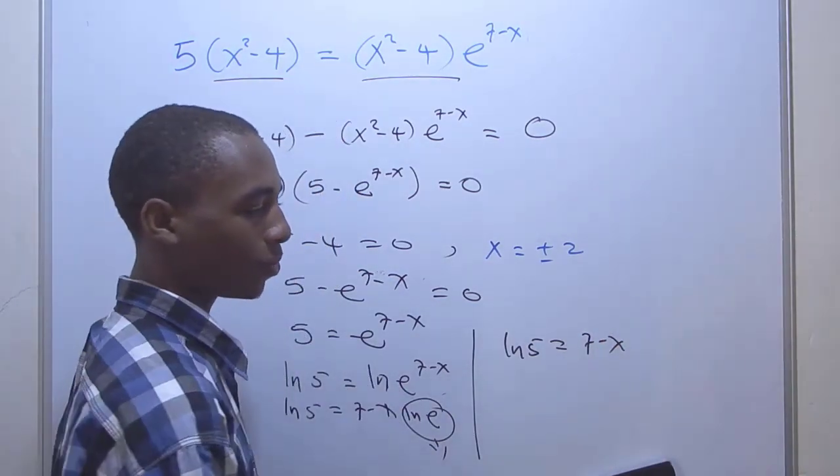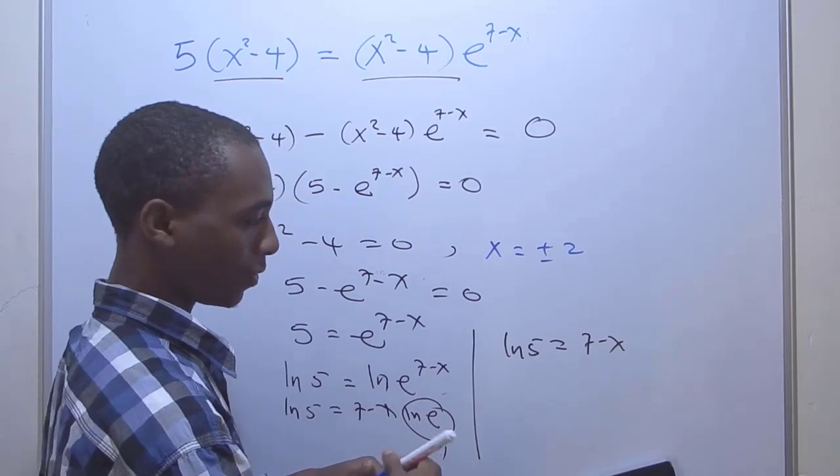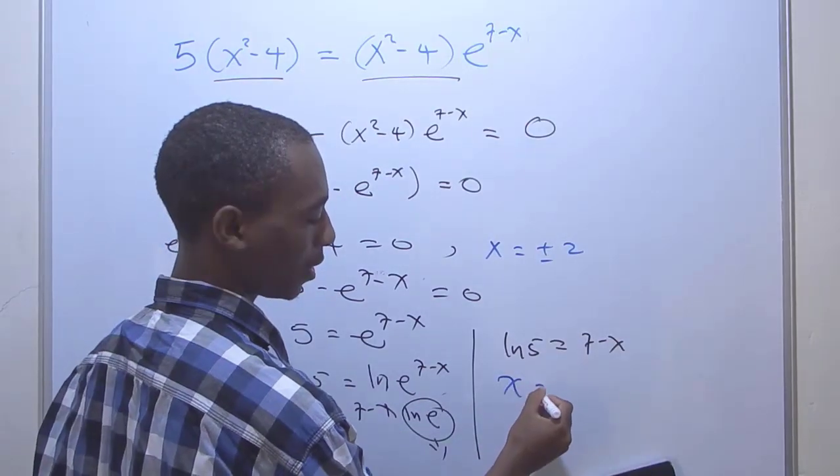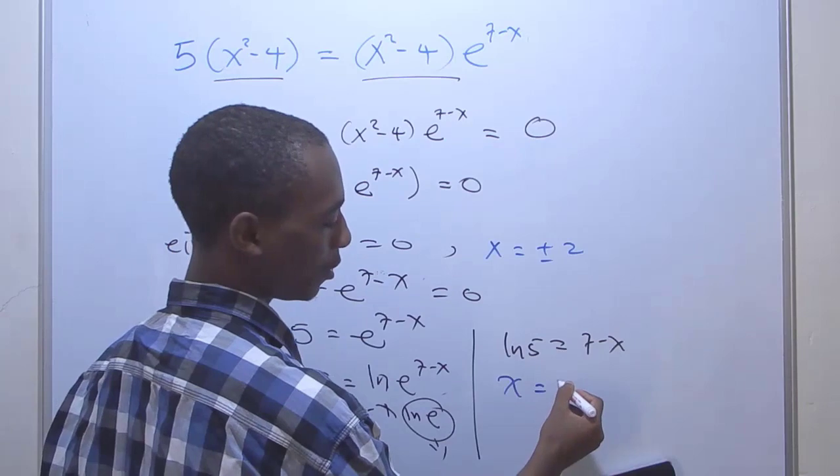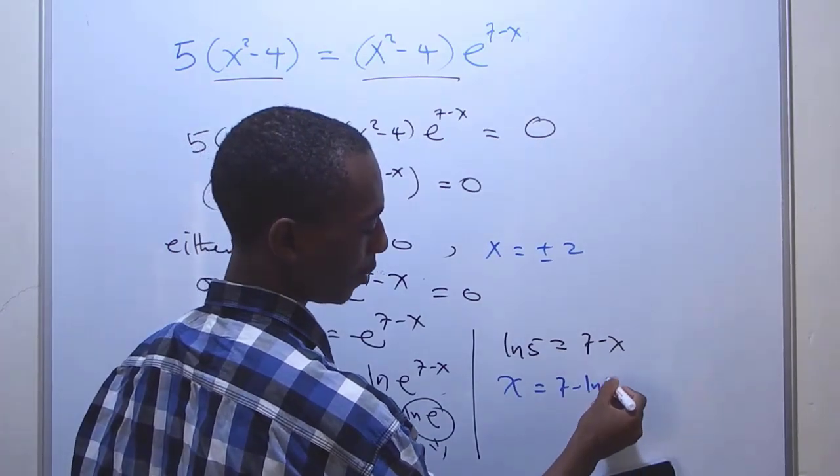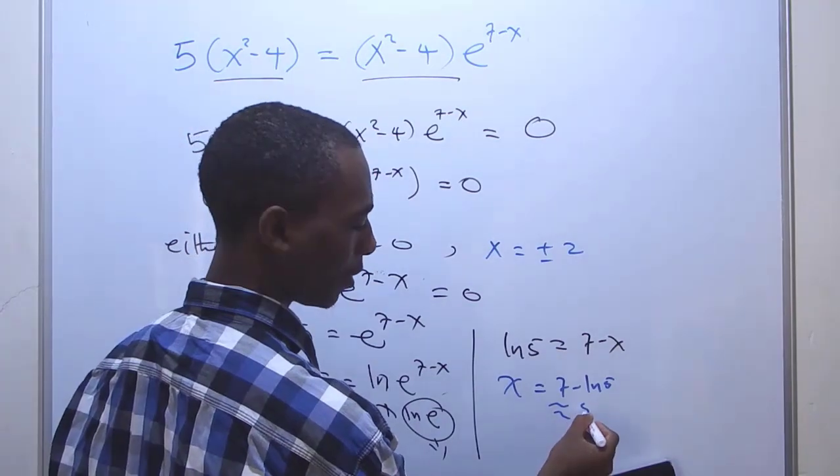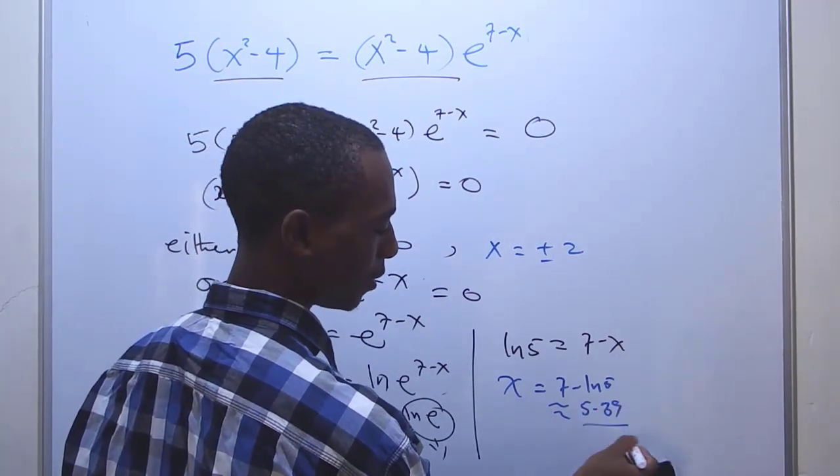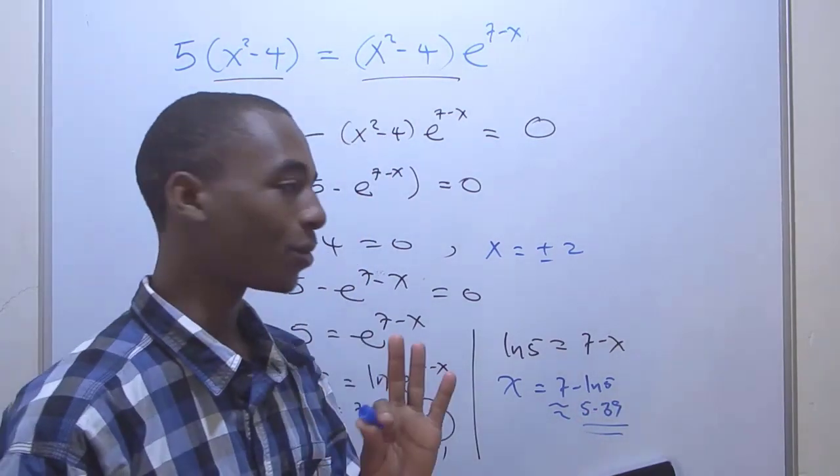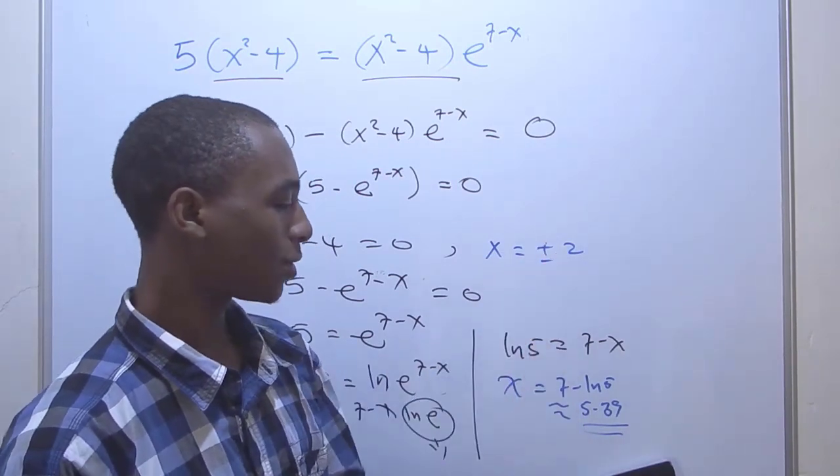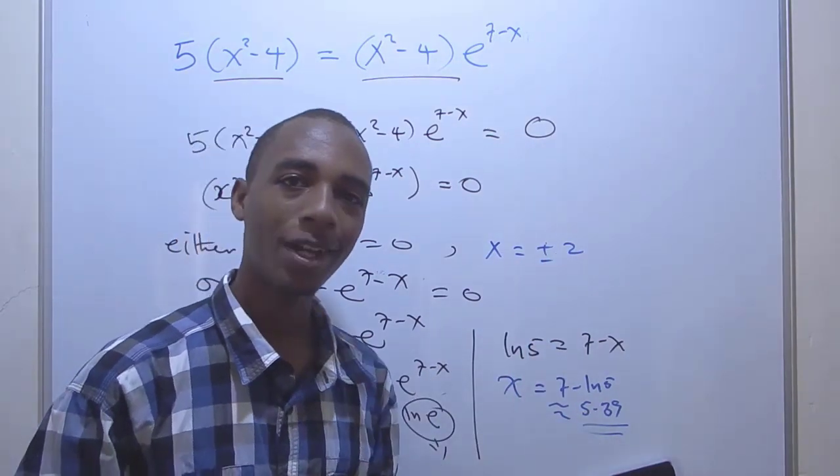And from here we can compute what x is. So finally, the third value of x is going to be 7 - ln 5. You can compute that on the calculator; it's approximately 5.39. So those are the three roots: x = ±2 and 5.39.